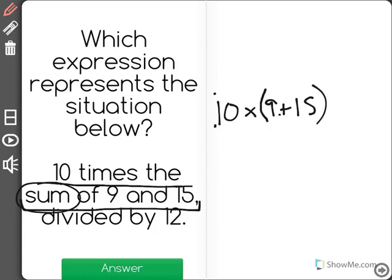So, now I could see that 9 plus 15 in parentheses will actually give me the sum of 9 and 15. So I'm doing 10 times the sum of 9 and 15 divided by 12. Divided by 12 happens last for our correct answer.